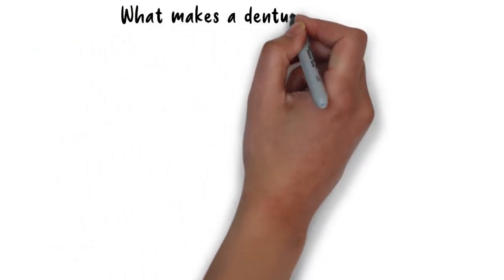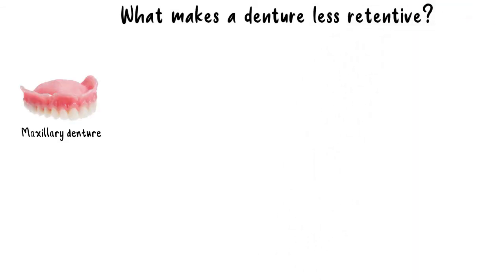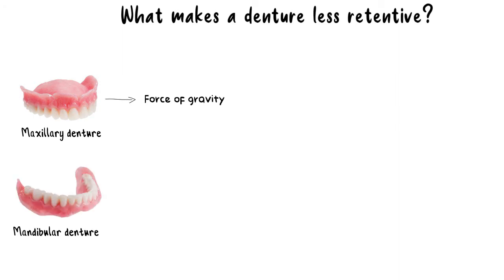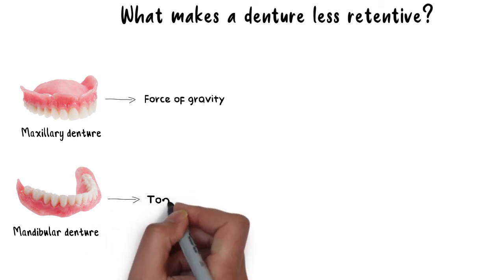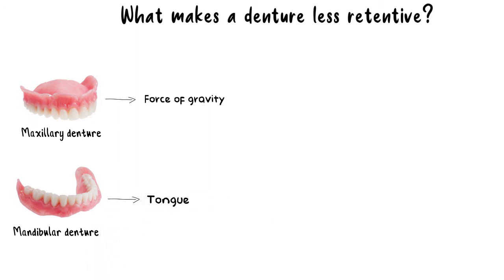Now, what causes a denture to be less retentive? For a maxillary denture, the main force that opposes retention is the force of gravity pulling the denture in the downward direction. In the case of a mandibular denture, the main force that may cause dislodgement will be the force from movements of the tongue. The tongue does also interfere with retention of the maxillary denture, but its effect is lesser compared to its effect on the mandibular denture, while gravity remains the main culprit for opposing retention of the maxillary denture.